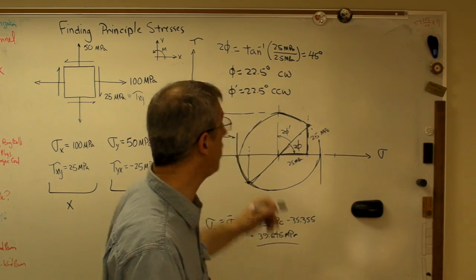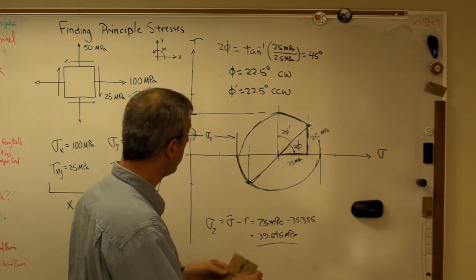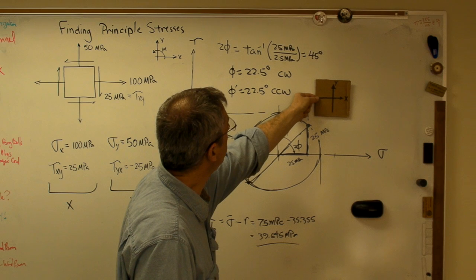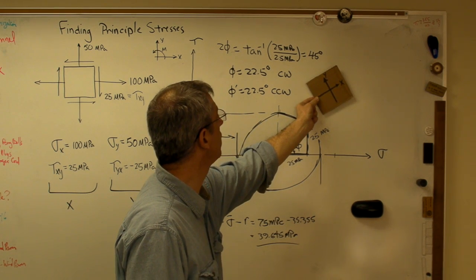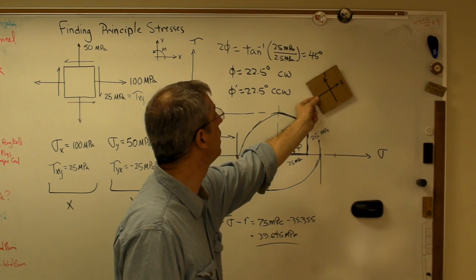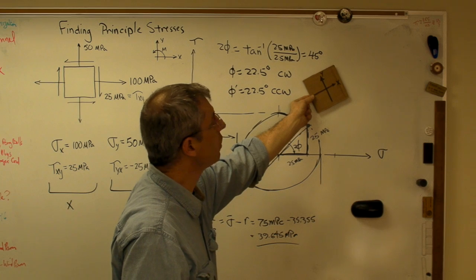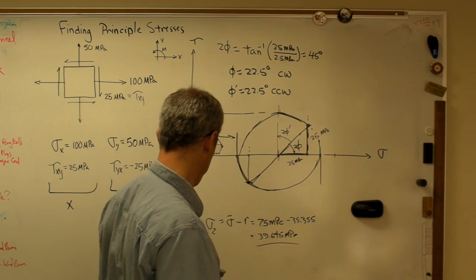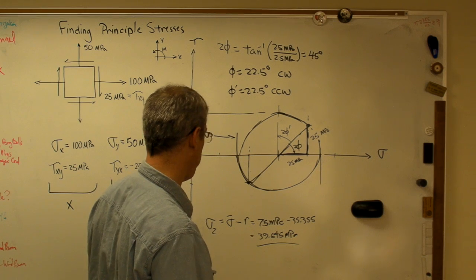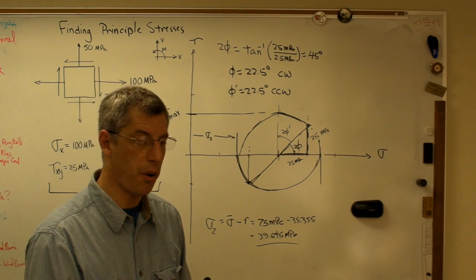Now, this isn't generally true. Remember, these numbers correspond only to this example. That means if I take my stress element and rotate it 22.5 degrees counterclockwise, that now the x face, this face right here, will see the maximum shear stress, tau max, which was 35.355 megapascals. So there you go.